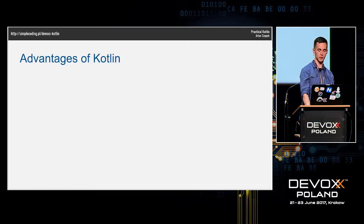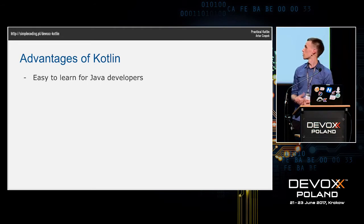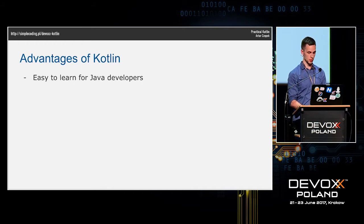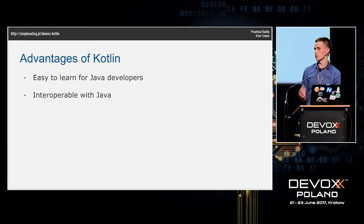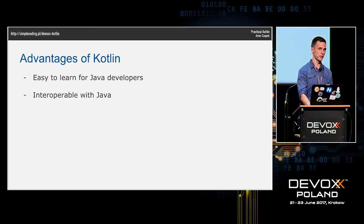Kotlin has many advantages. The first one, for me, is that it's easy to learn for Java developers. As a Java developer, it took me maybe one or two evenings to understand the basic concepts of this language. Kotlin is also interoperable with Java, which means you can easily use external Java libraries in Kotlin and vice versa — there is no problem.